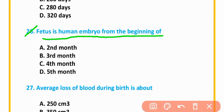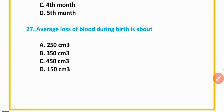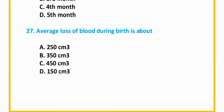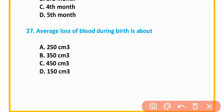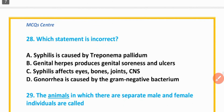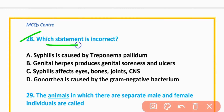MCQ number 26: Meters in human embryo form from the beginning of the third month. Option D is correct. MCQ number 27: Average loss of blood during birth is about 350 cubic centimeters. Option B is correct.